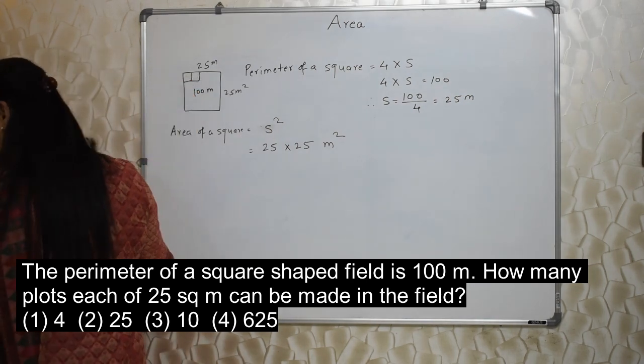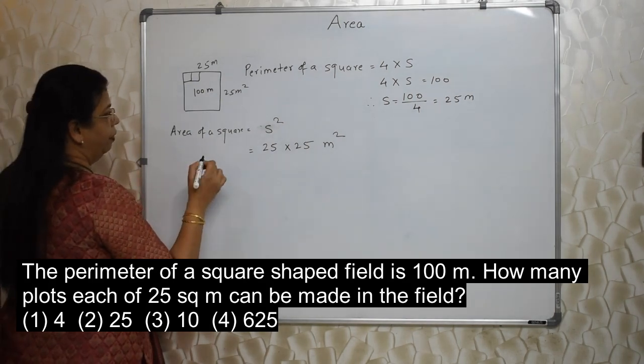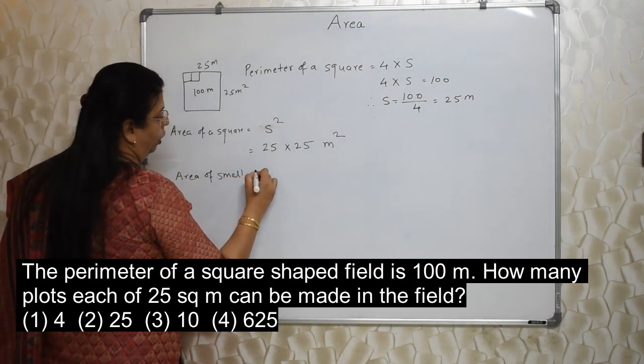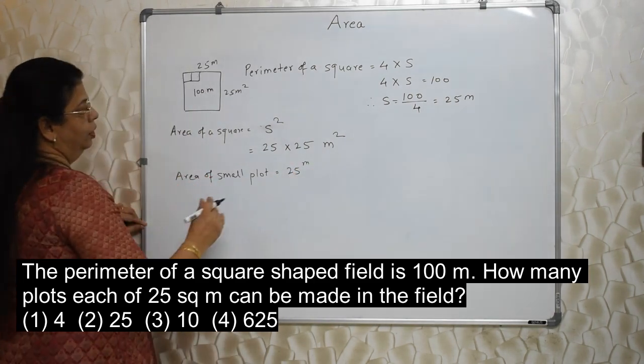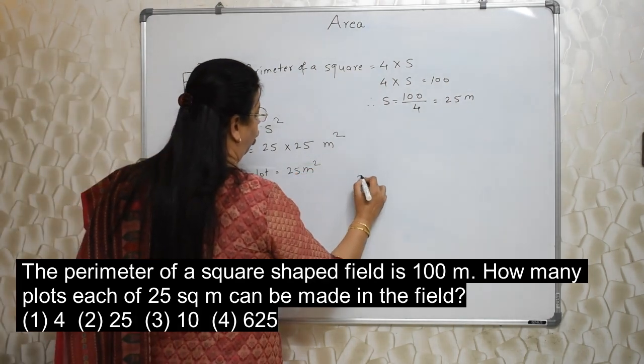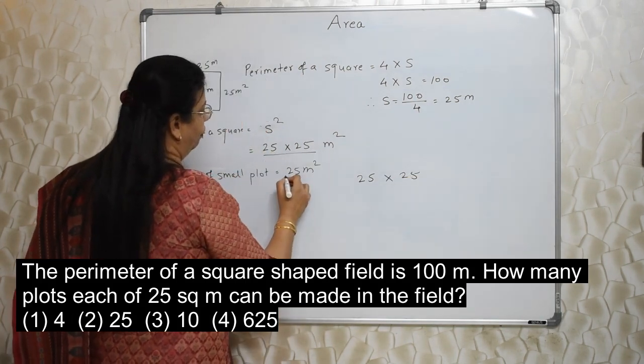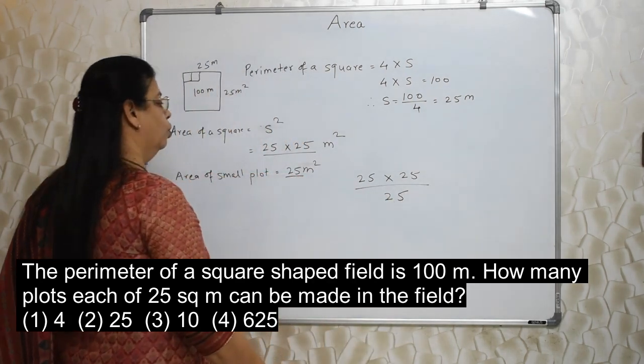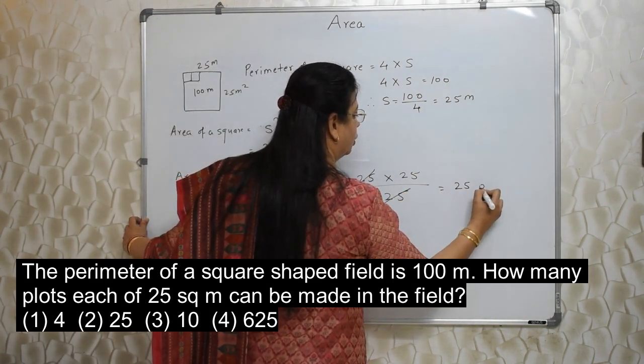Now we are dividing this into small, small plots. They have made our job easy. They have given the area of small plot. Area of a small plot, they have given ready-made 25 meter square. So this bigger plot of 25 into 25, we want to divide into small small plots of 25 meter square. So let's do it. So 25 has gone with this. So 25 plots is the answer.